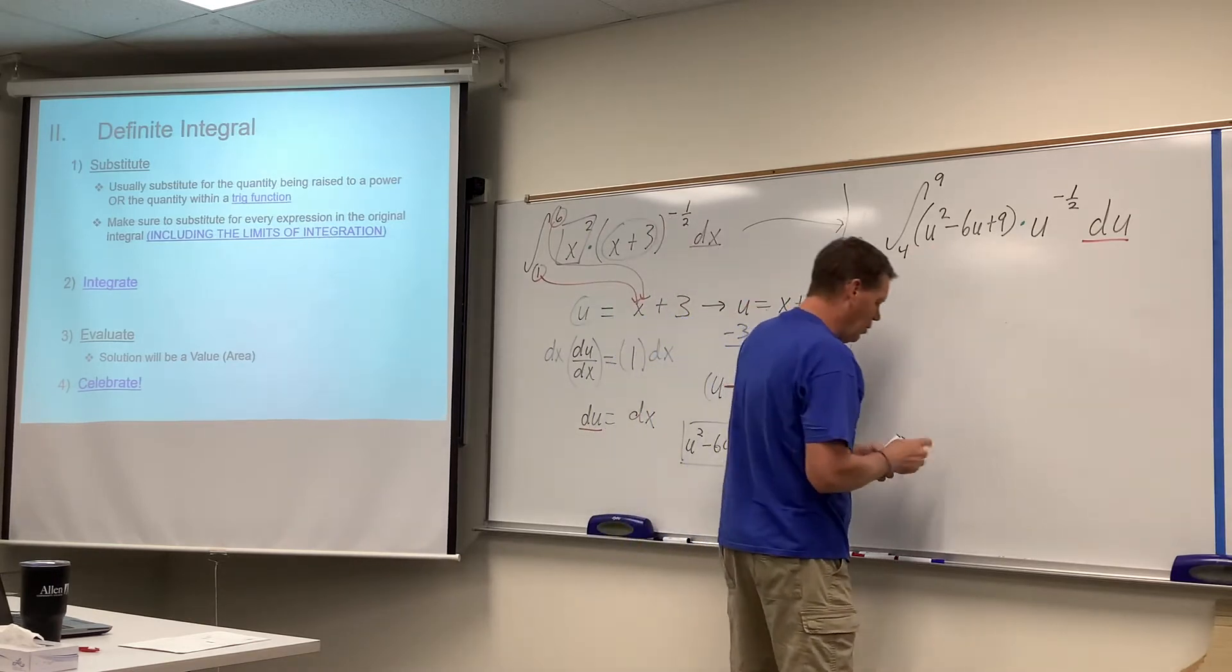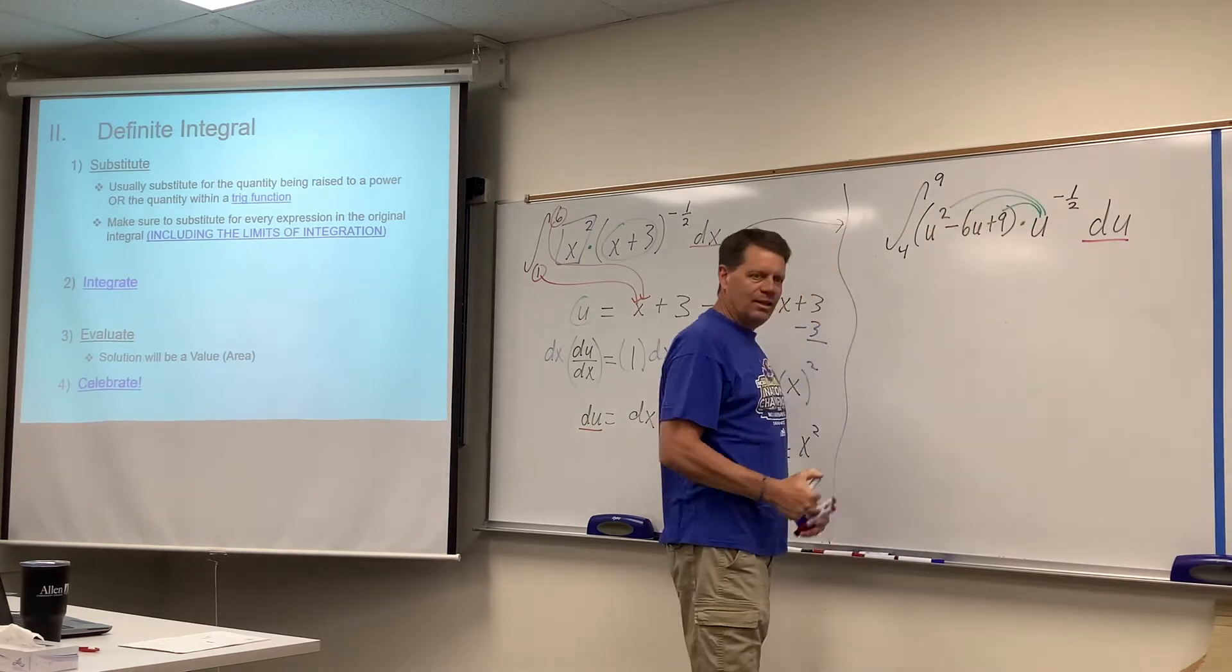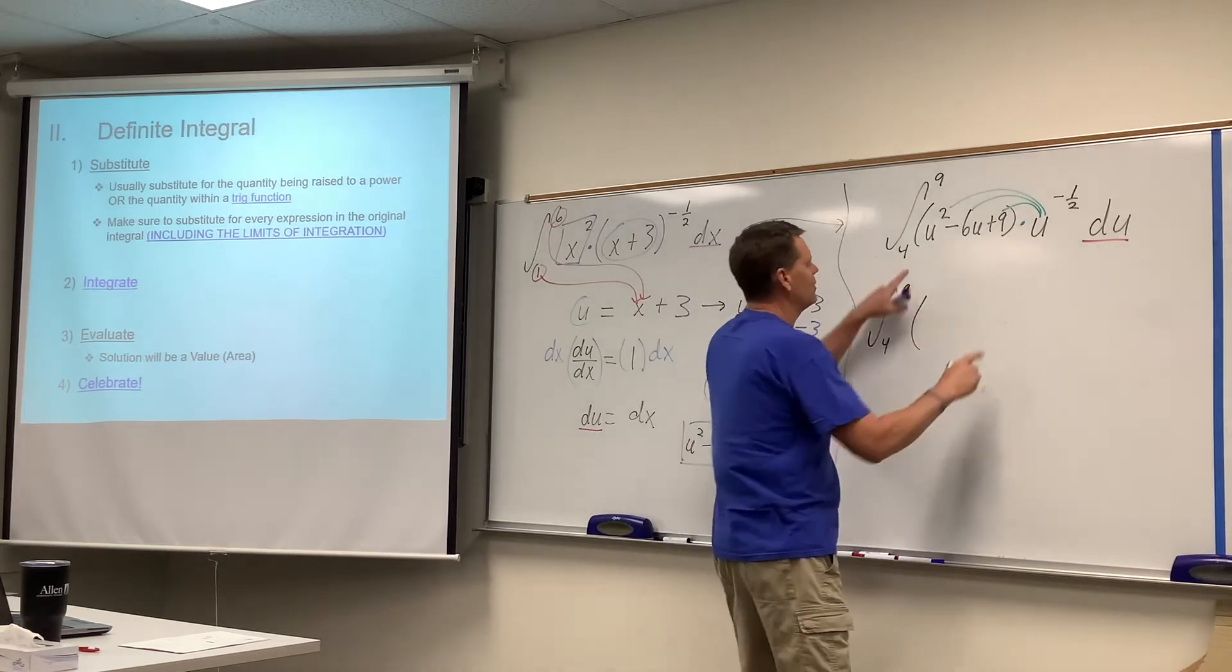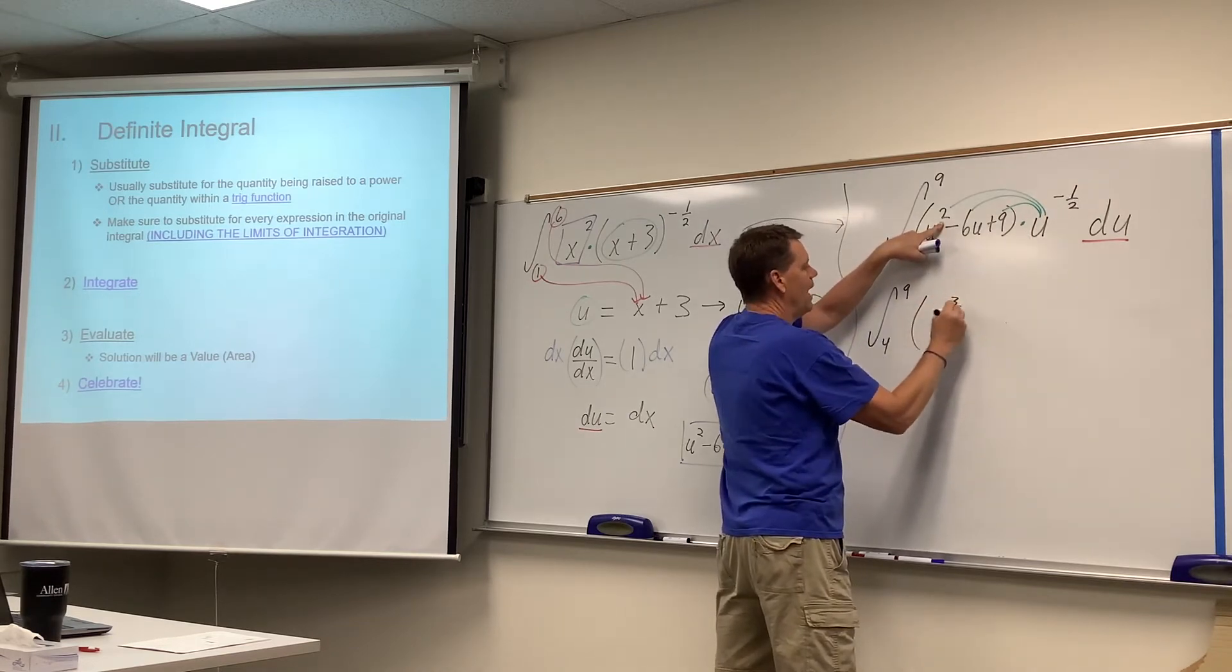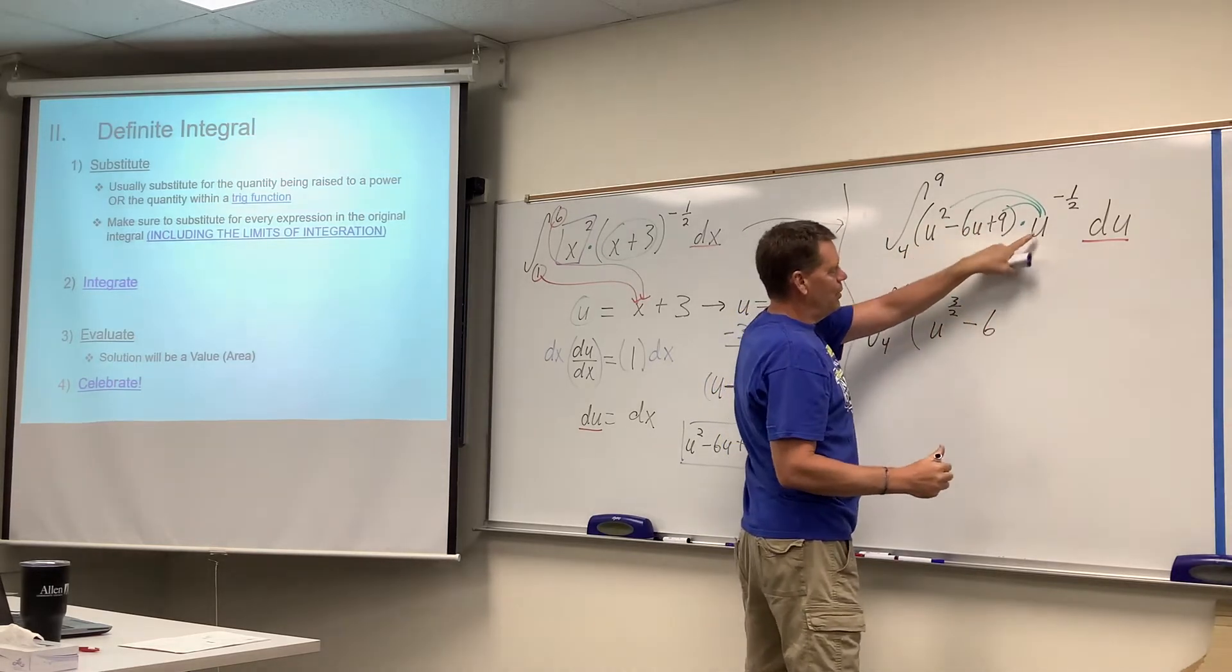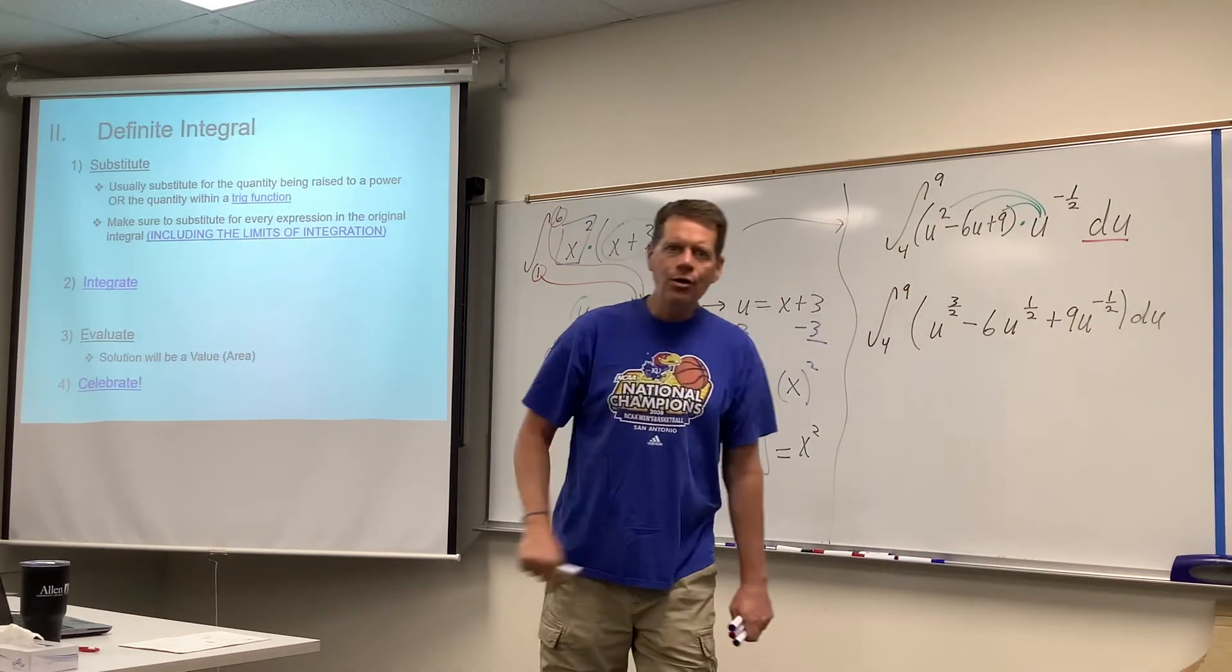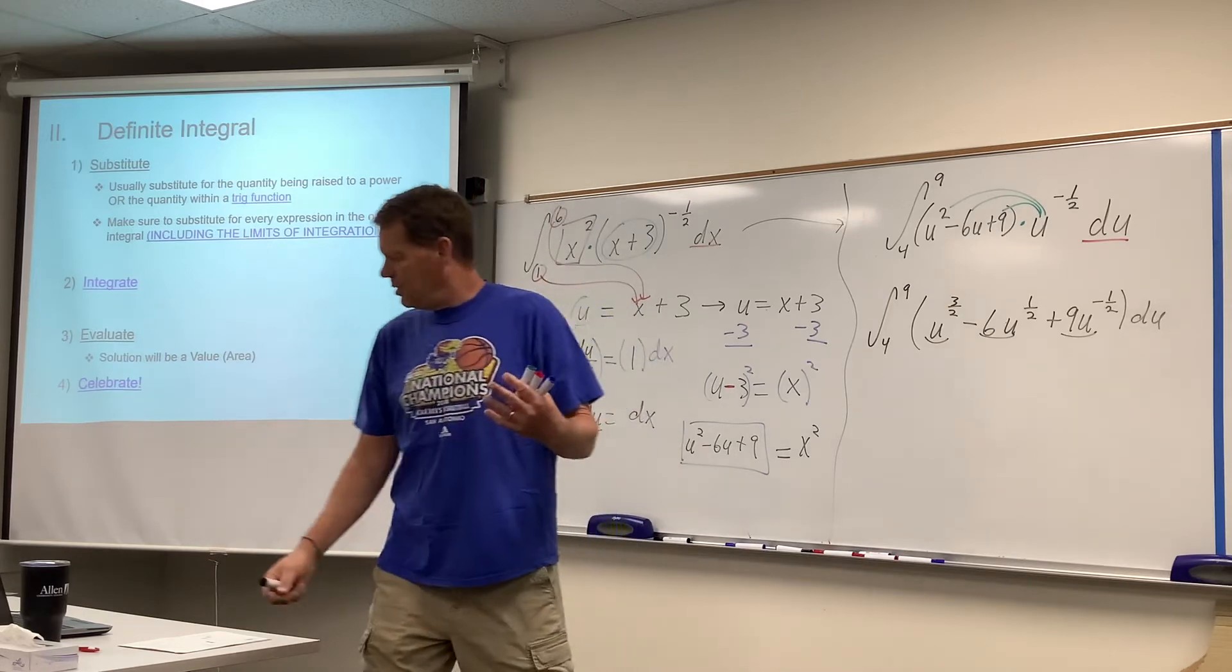It's still a product, but you know what, unlike the one back there we can distribute the u to the negative 1/2 into these parentheses, and this is going to generate terms and powers and we're going to be able to finish the thing off. So we have the integral from 4 to 9. Properties of exponents - you add the powers in a case like this, so 2 and negative 1/2, that would equal u to the 3/2 minus 6, that's u to the first. And the first power and the negative 1/2 power make the 1/2 power, and that's going to be plus 9u to the negative 1/2. And this is where we go, I get it, we can integrate u. This is now terms with powers.